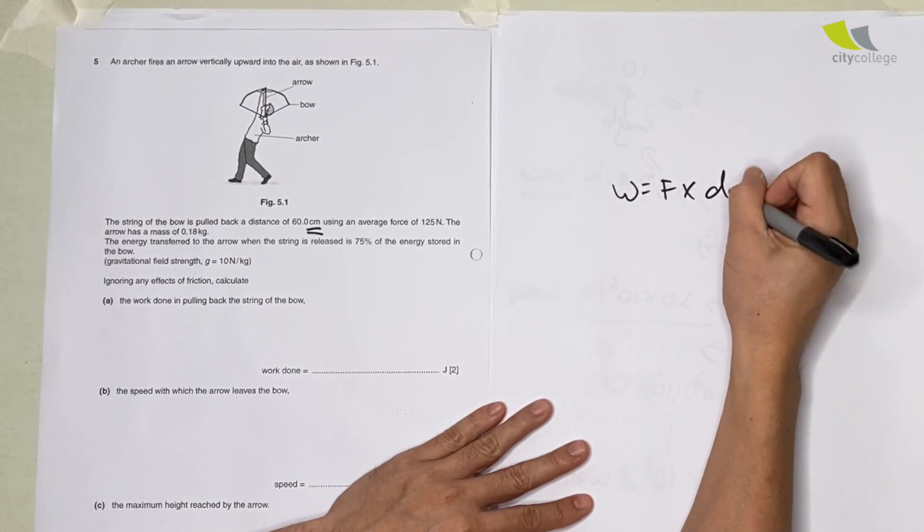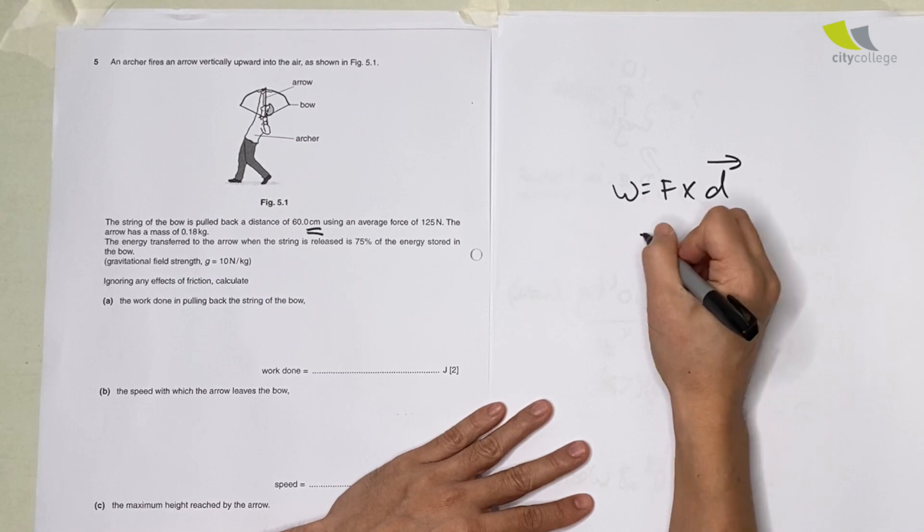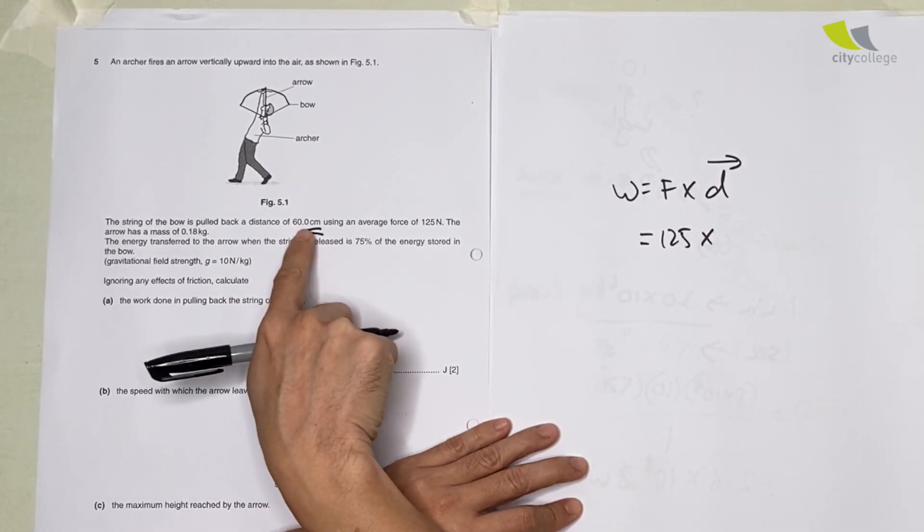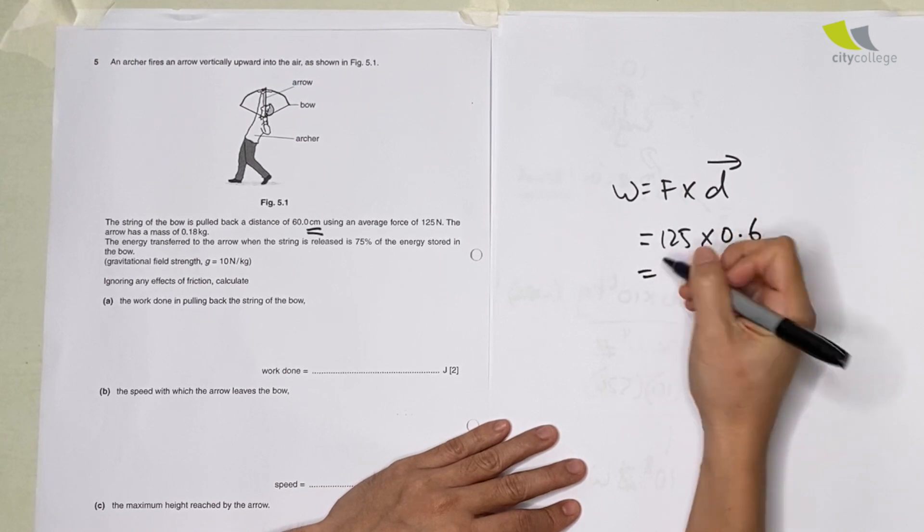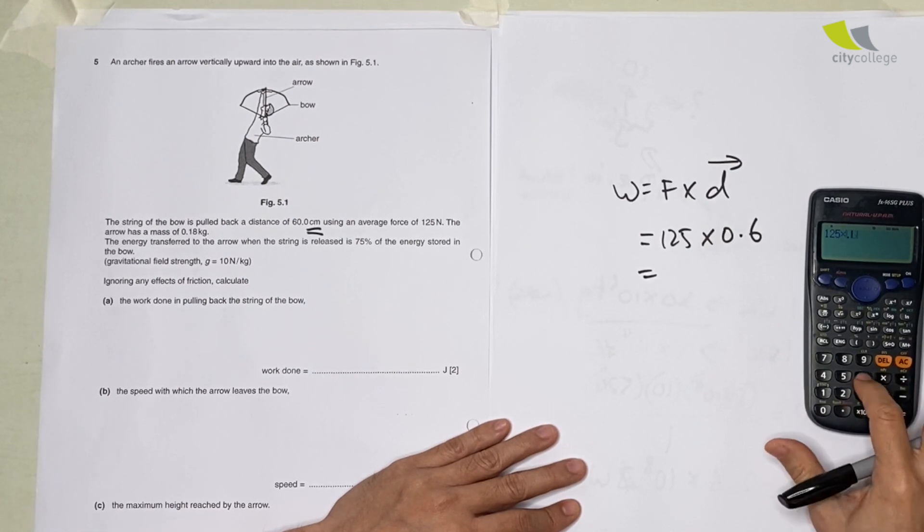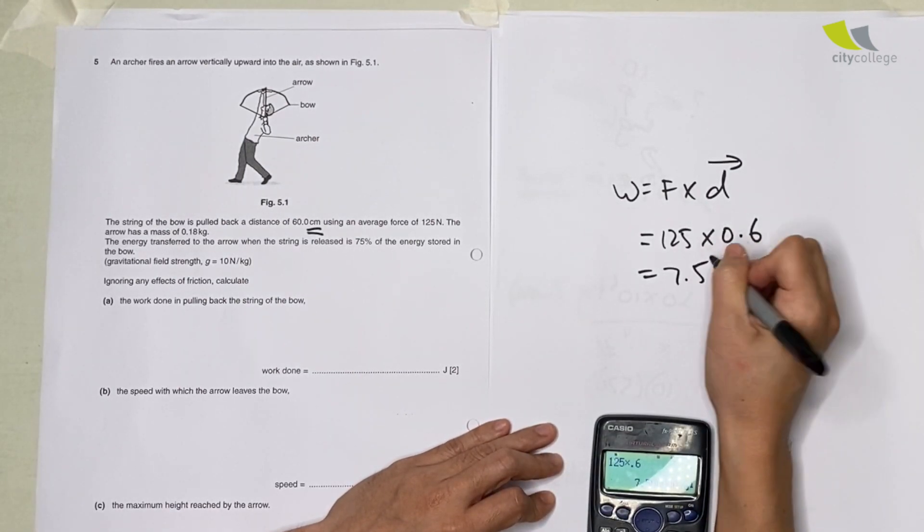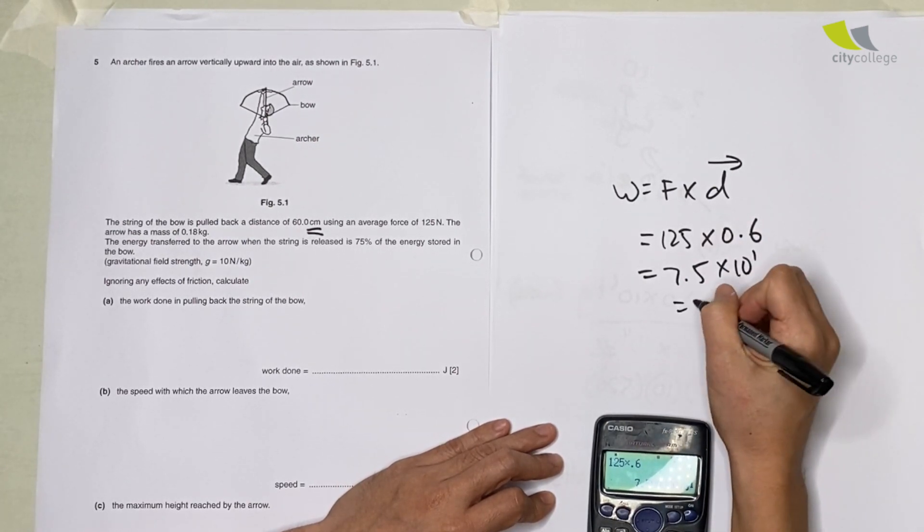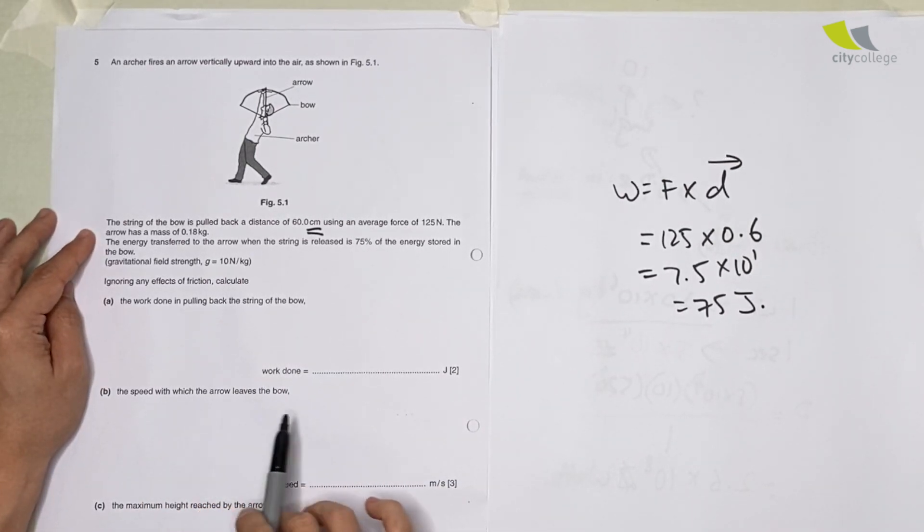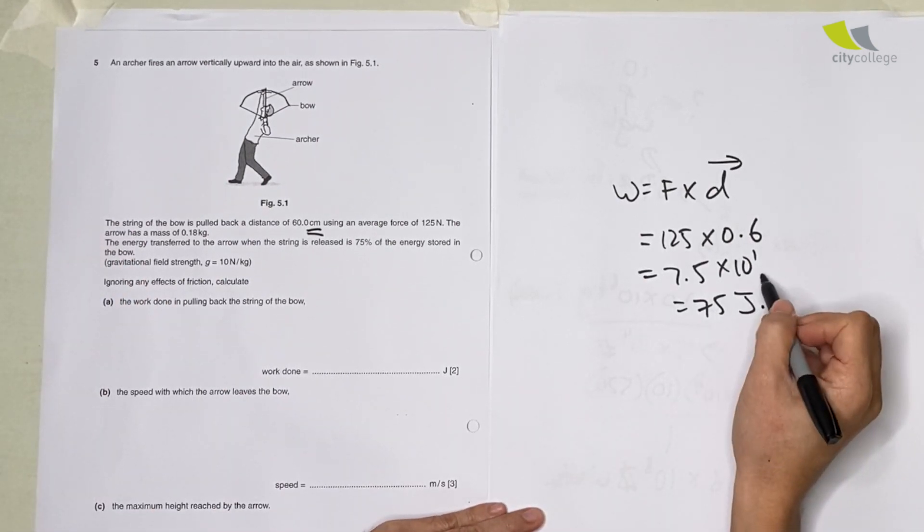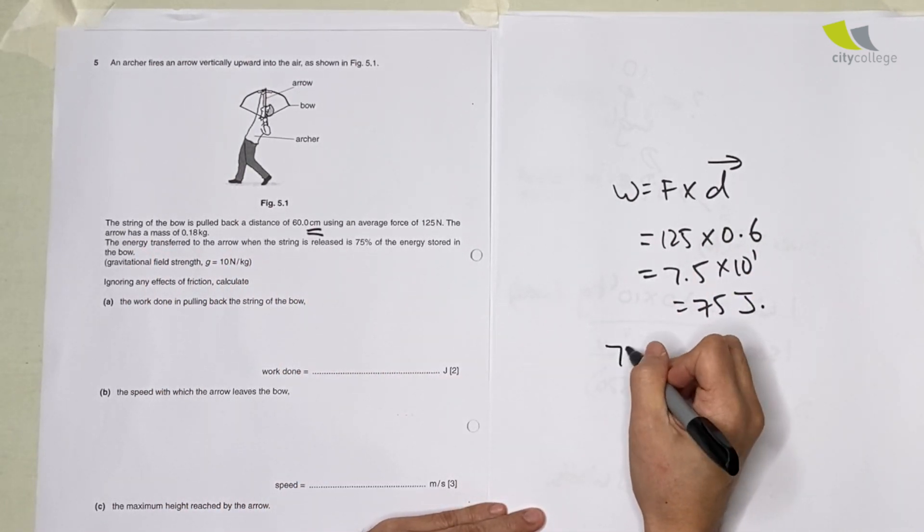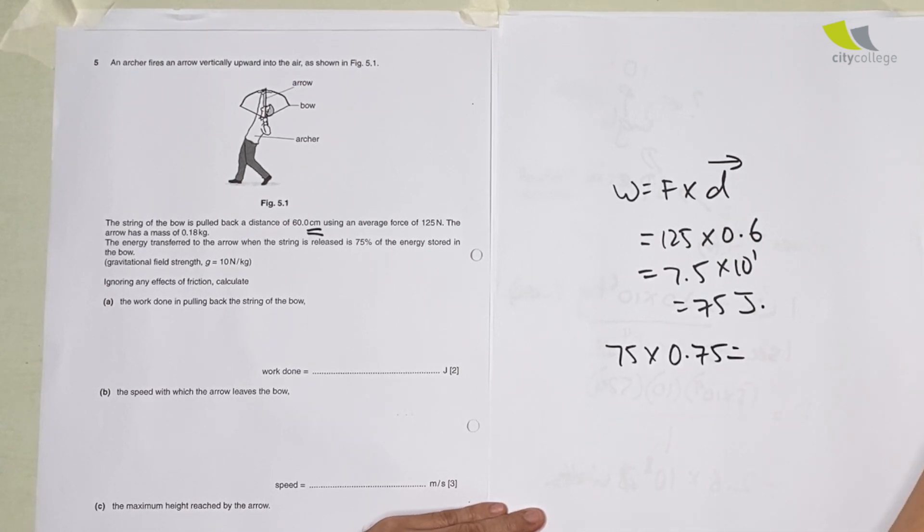So work done is equals to force multiply by distance in the direction of the force. The force we know is 125, distance is 60 cm which we need to convert to meters, so it's 0.6. So you will get 125 multiply by 0.6 equals 75 joules. For the speed at which the arrow leaves the bow, you have to equate this work done. They say energy transfer is 75 percent, so we need to take 75 multiply by 0.75, so you'll have the energy that's remaining: 56.25 joules.